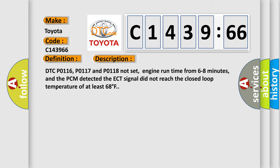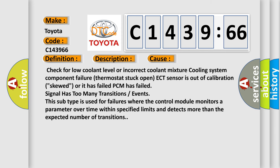DTC P0116, P0117 and P0118 not set, engine run time from 6 to 8 minutes, and the PCM detected the ECT signal did not reach the closed loop temperature of at least 68 degrees Fahrenheit.